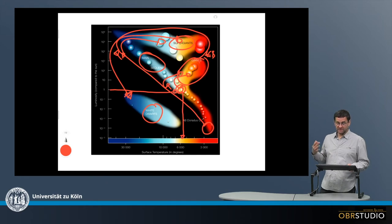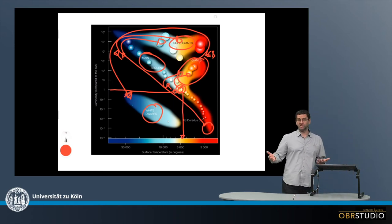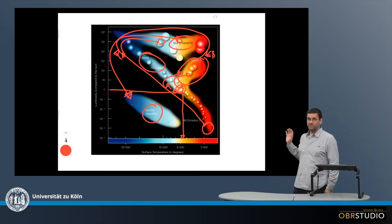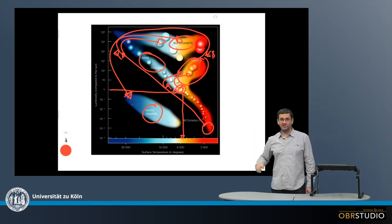So this is in general how the Hertzsprung-Russell diagram works. So these are the fundamentals and this is basically all we need to know in cosmochemistry with regard to the Hertzsprung-Russell diagram.